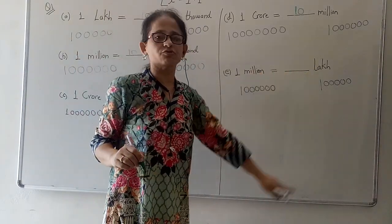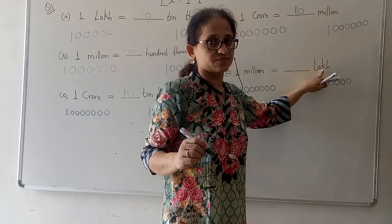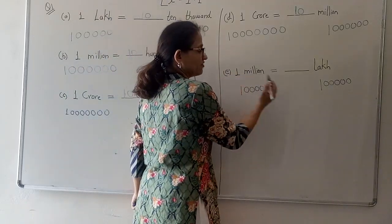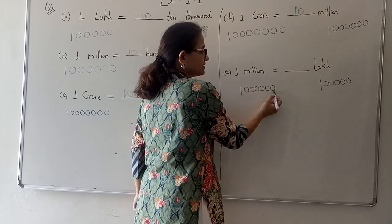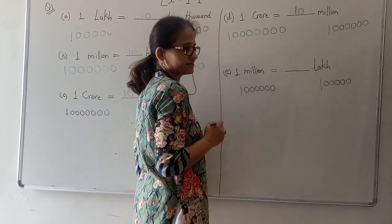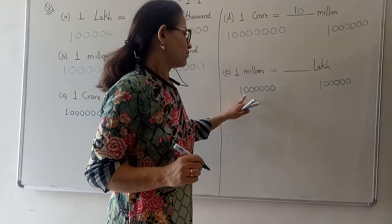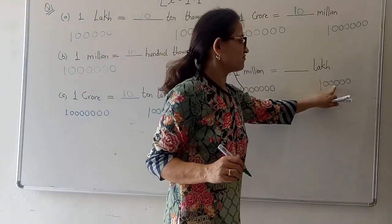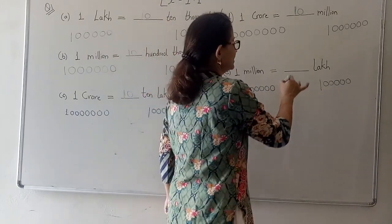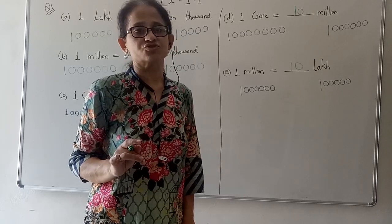Same way, one million is equal to how many lakhs? Now million is the international system of numeration and lakhs is the Indian system of numeration. One million written from the back: ones, tens, hundred, thousand, ten thousand, hundred thousand, and million — that has six zeros. For lakhs: ones, tens, hundred, thousand, ten thousand, and lakhs — that has five zeros. One zero is missing, so if I multiply lakh by ten, ten lakhs together will form one million. I hope this question is very clear to you. Thank you.